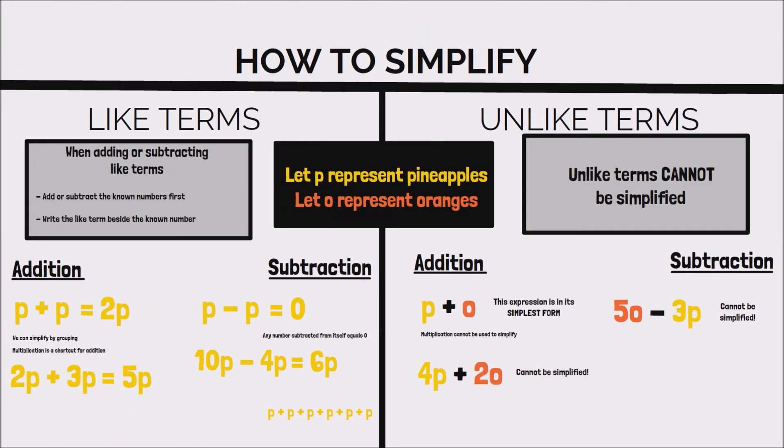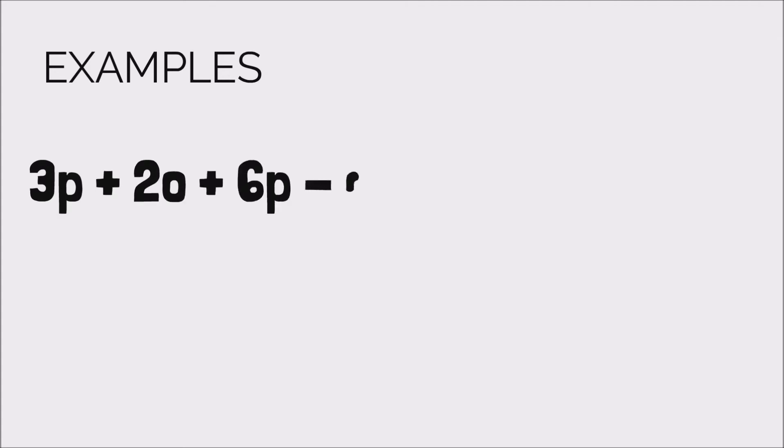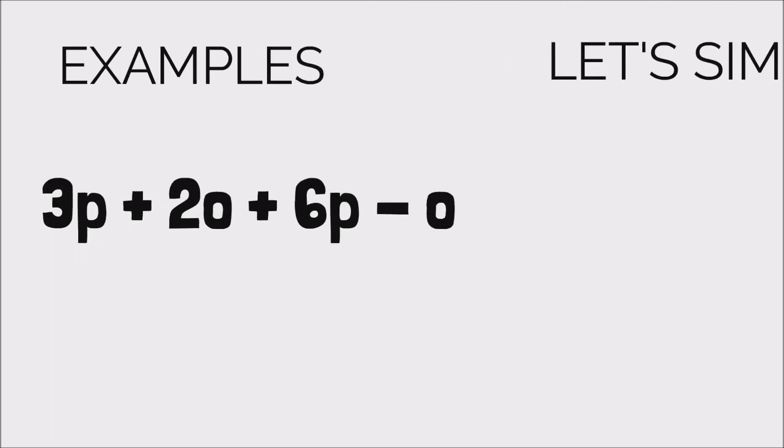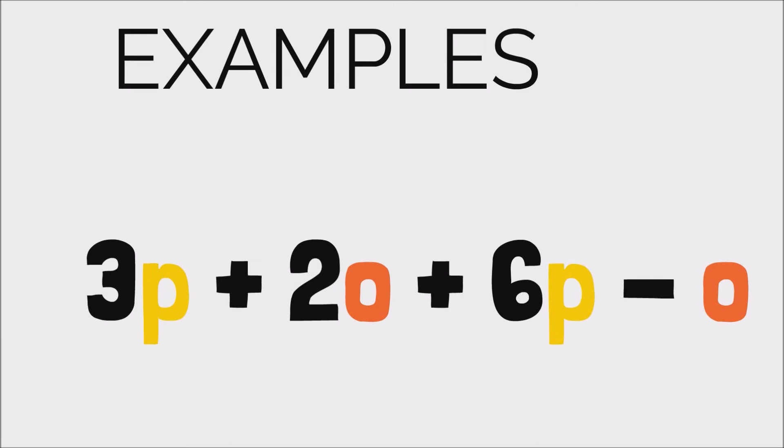Now let's look at a few examples. Our first example is 3P plus 2O plus 6P minus O, and we want to simplify this expression. So we're seeing some P's and some O's, okay? And to get a better idea of if we can simplify this expression, we know that it has to involve some amount of like terms, because the only way we can simplify by adding and subtracting is if the terms are alike.